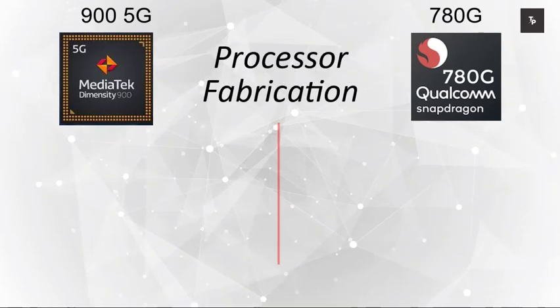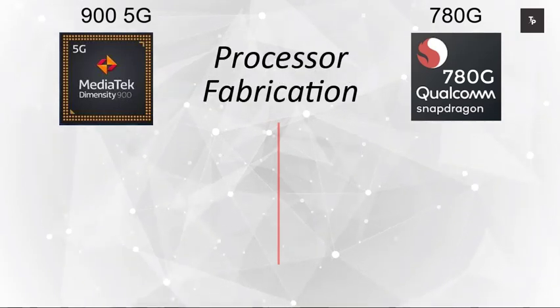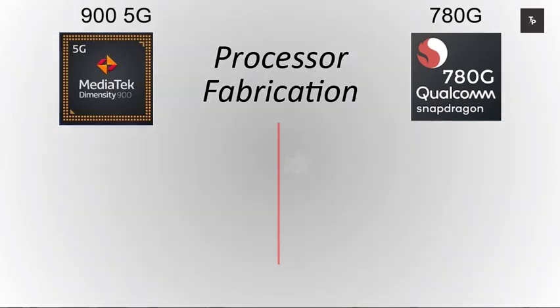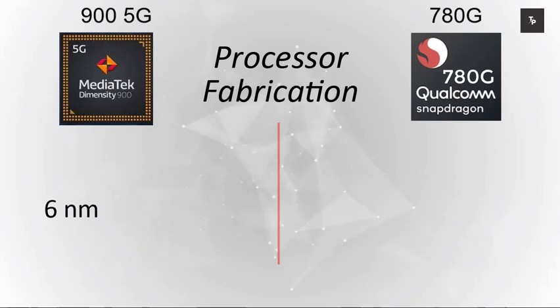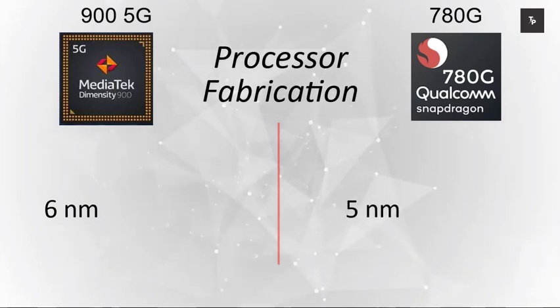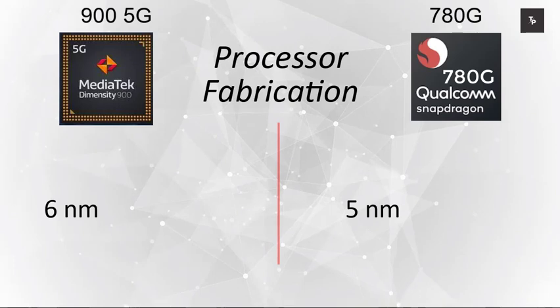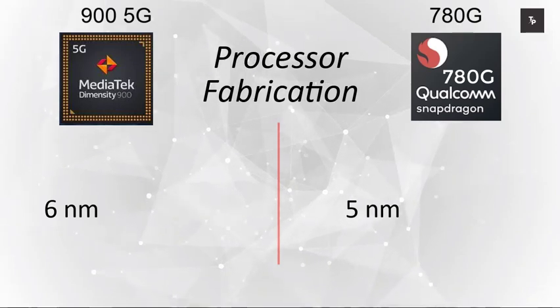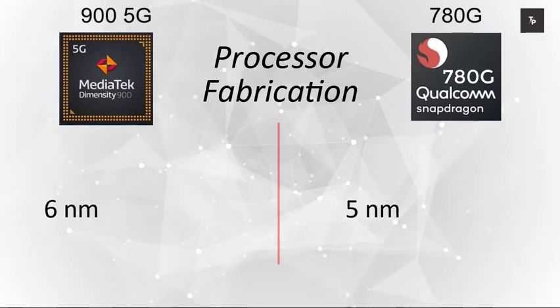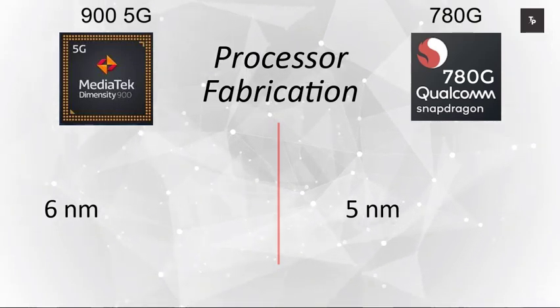The Snapdragon also has four power-efficient cores of 1.9 GHz Cortex-A55. Regarding processor fabrication, the MediaTek Dimensity 900 is built on a 6nm process, whereas the Snapdragon 780G uses a better 5nm process, making it much more power efficient.